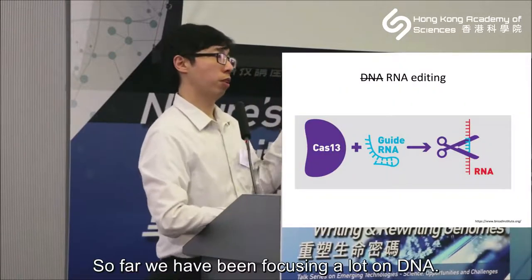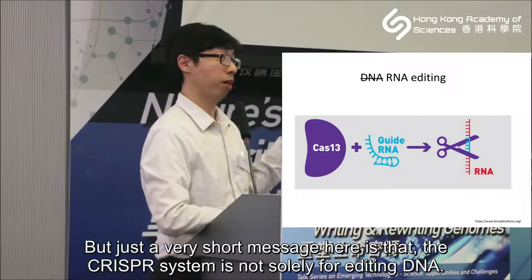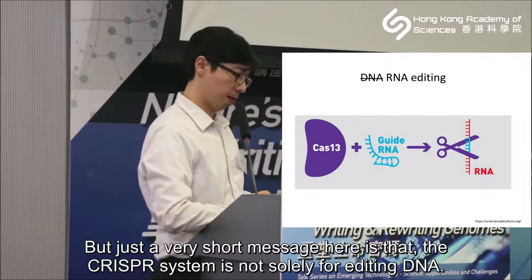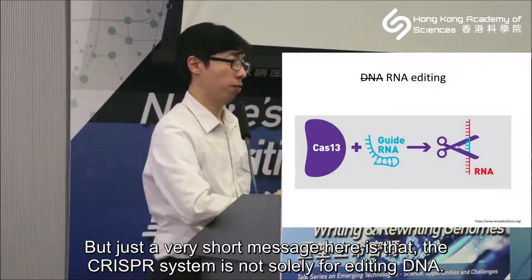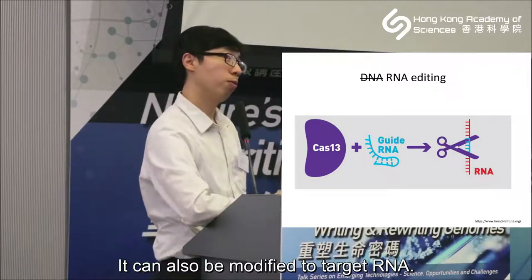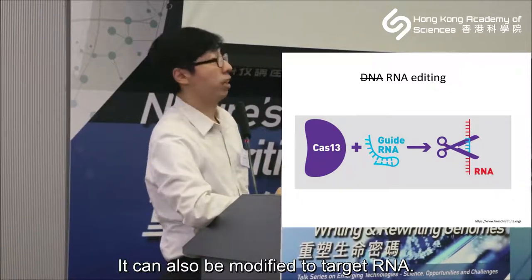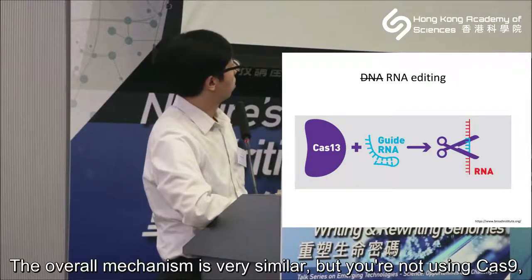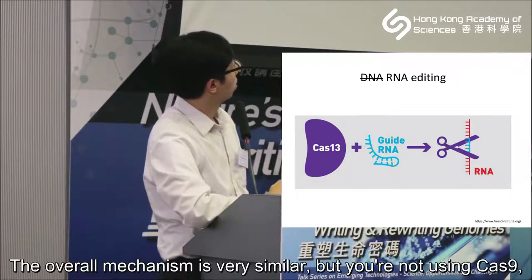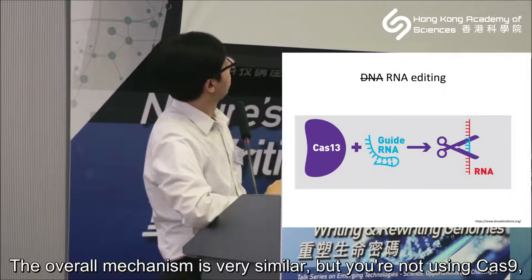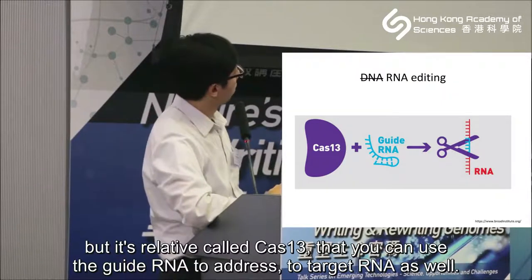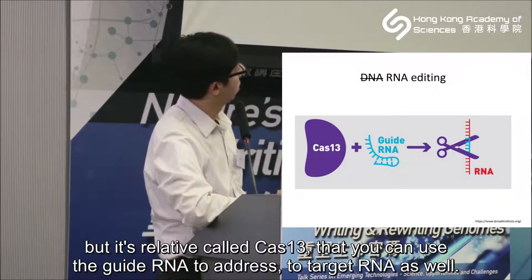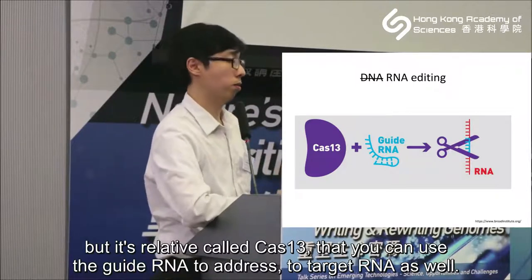So far we have been focusing a lot on DNA, but a short message here is that the CRISPR system is not solely for editing DNA — it can also be modified to target RNA. The overall mechanism is very similar, but instead of Cas9, you use its relative Cas13, which you can use with a guide RNA address to target RNA as well, not necessarily DNA.